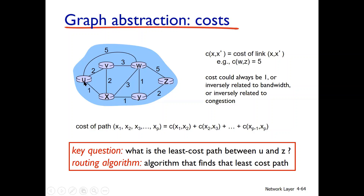The cost of a source-to-destination path is the total sum of all link costs along that path. For example, the cost of path X1, X2, ..., Xp is the sum: cost(X1,X2) + cost(X2,X3) + ... + cost(Xp-1, Xp). From source U to destination Z, there are many possible paths, and the minimum cost path is what routing algorithms are designed to determine.